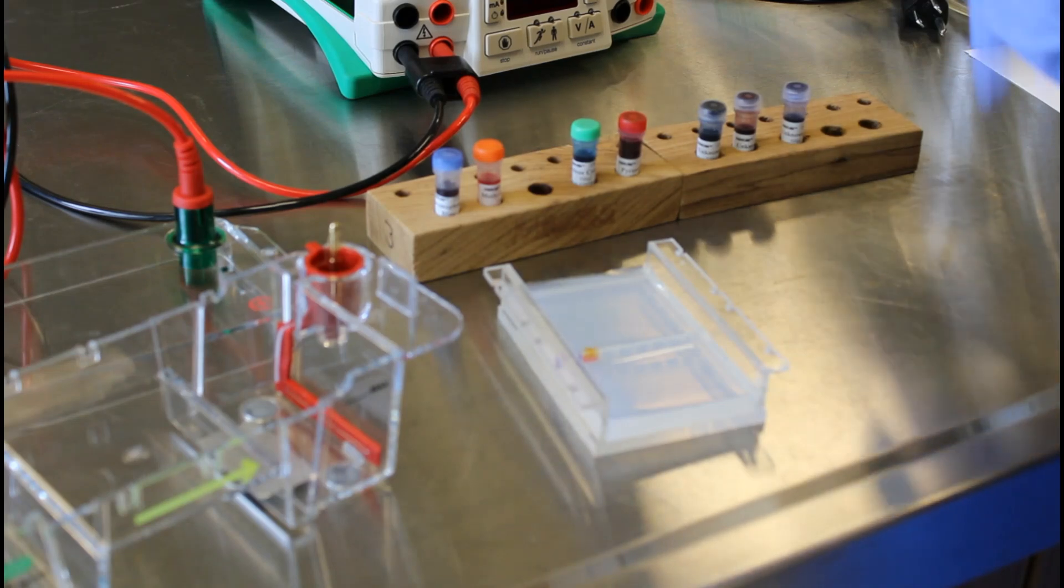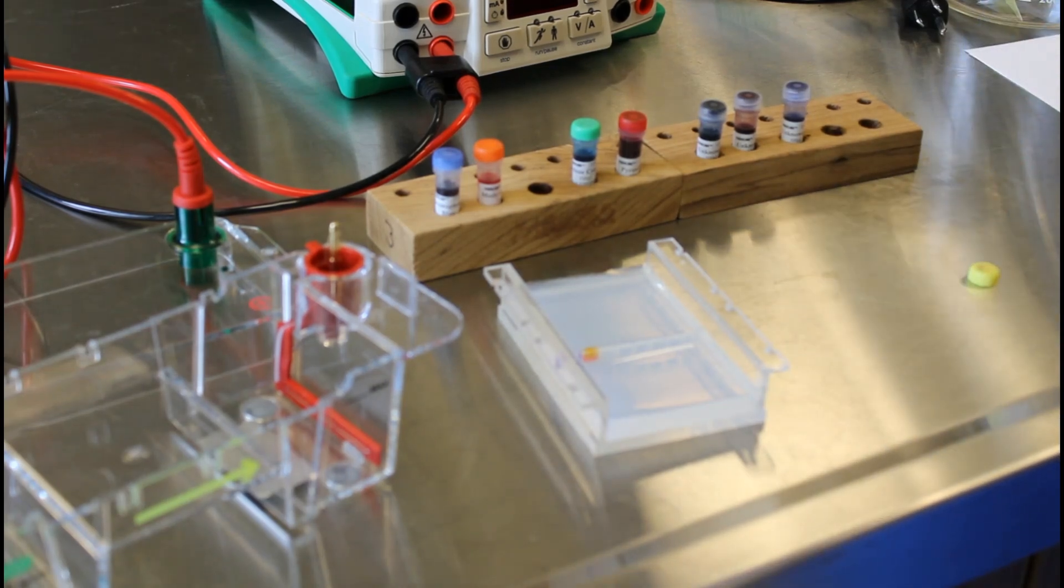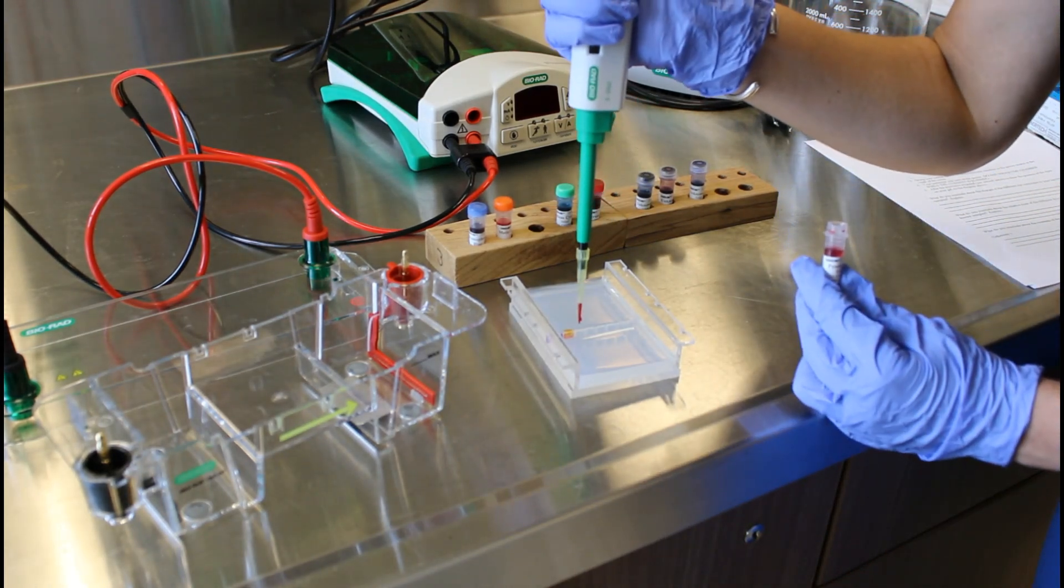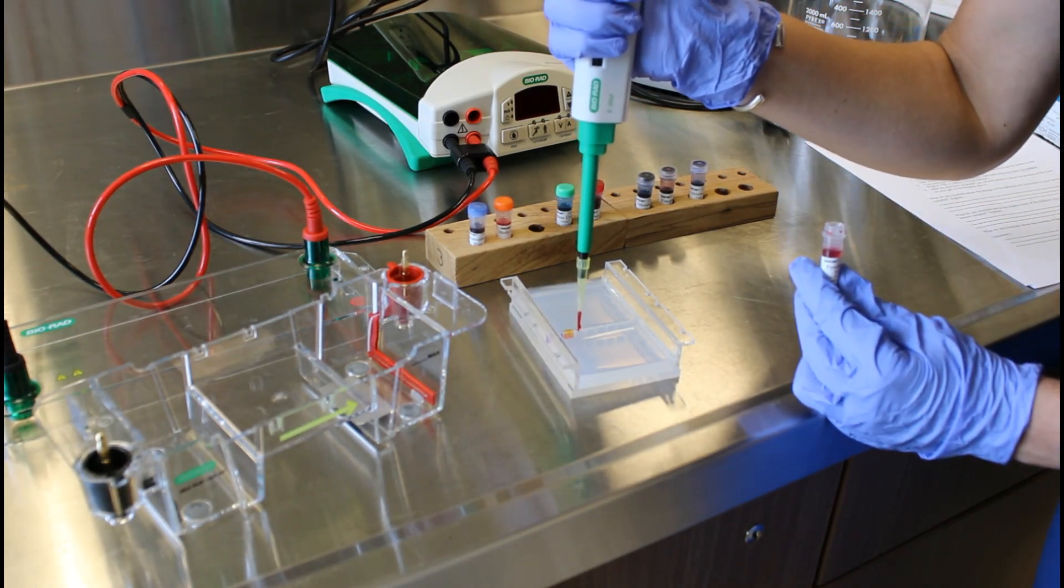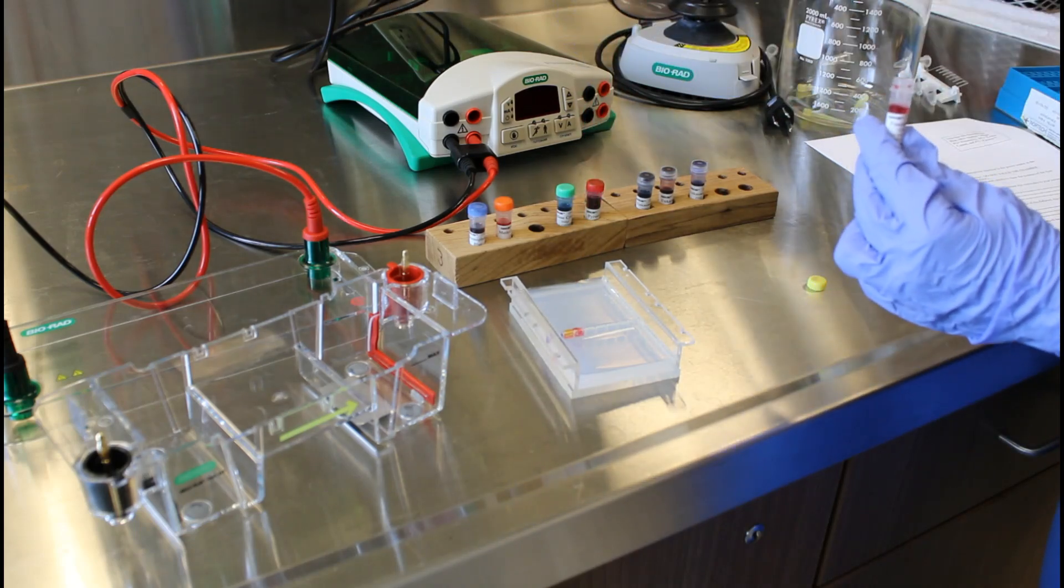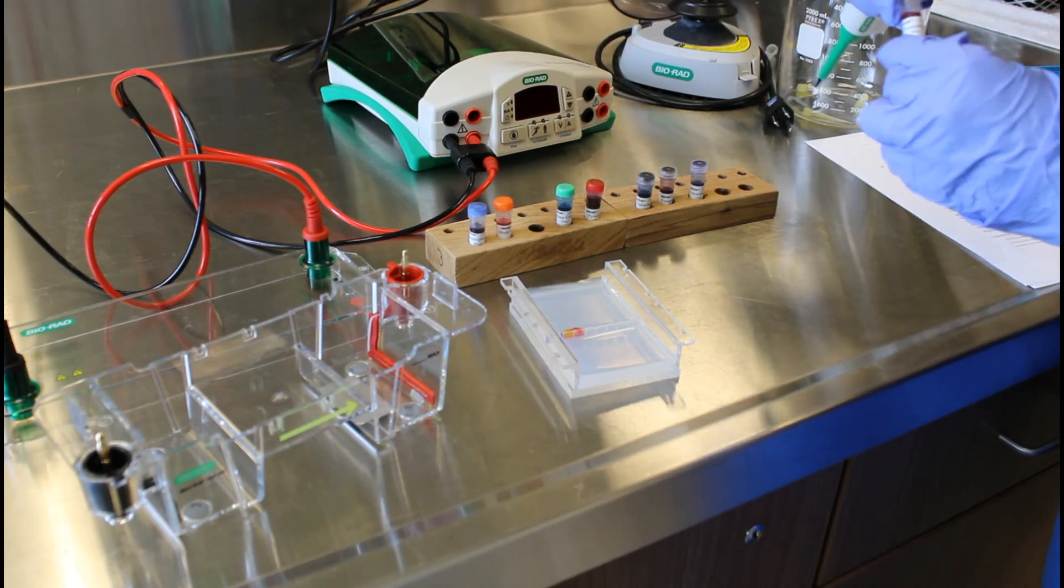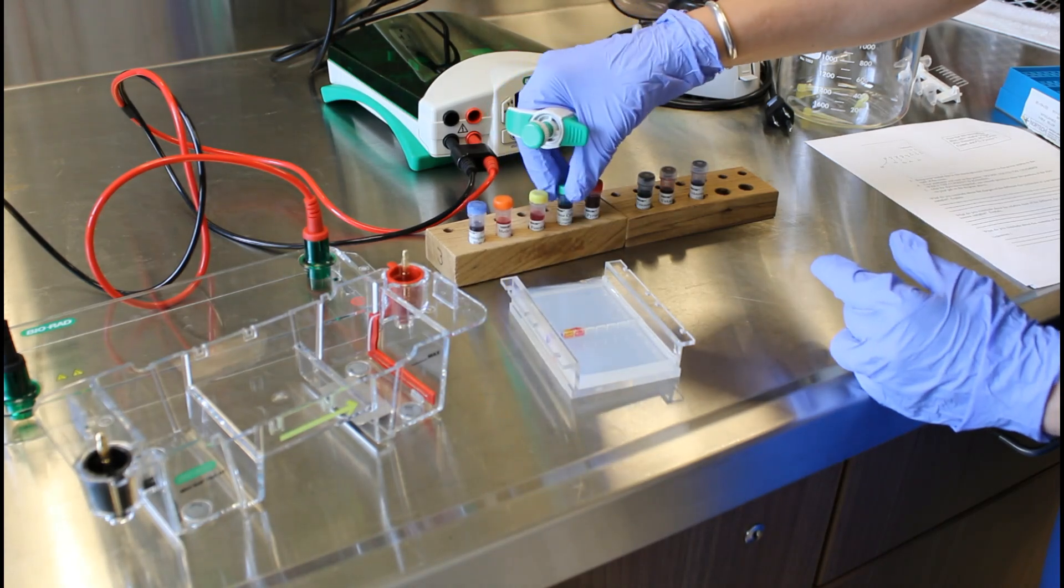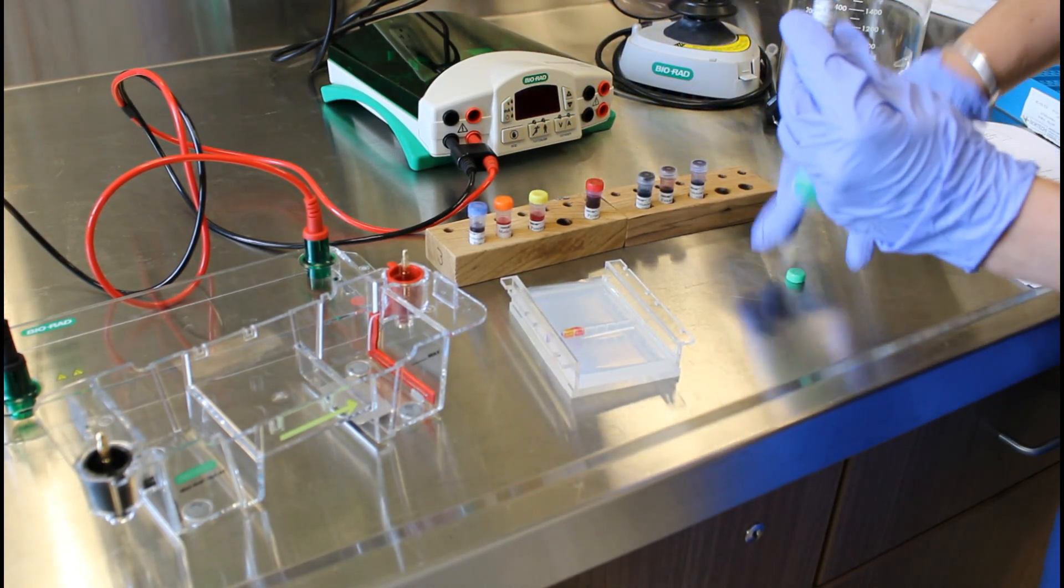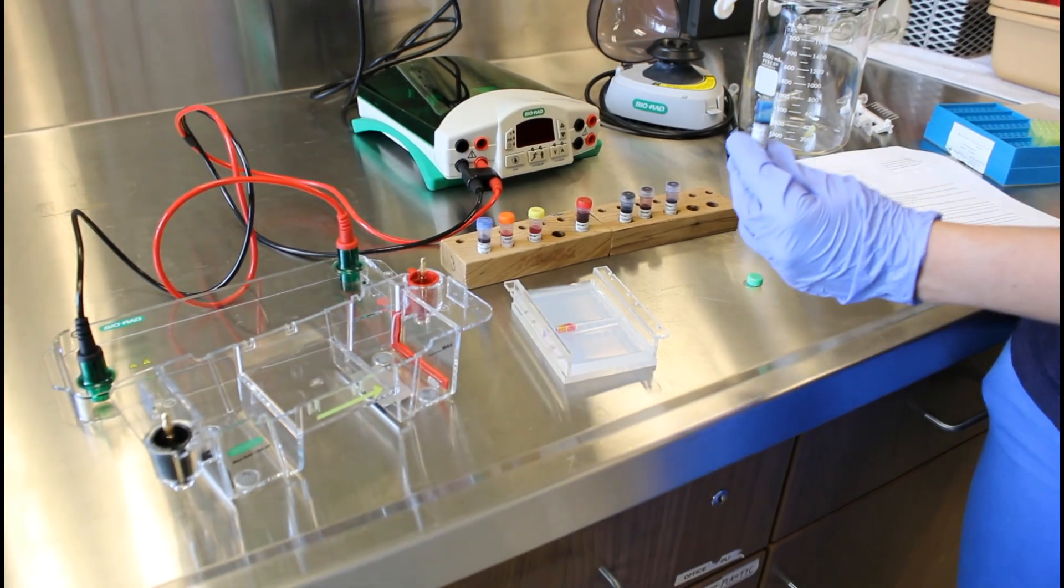This is our PG dye. I'm going to grab 20 microliters, try to get it all in the well this time. Mostly. Then I'm going to load up our XC, our xylene cyanol. I'm going to get a new tip.